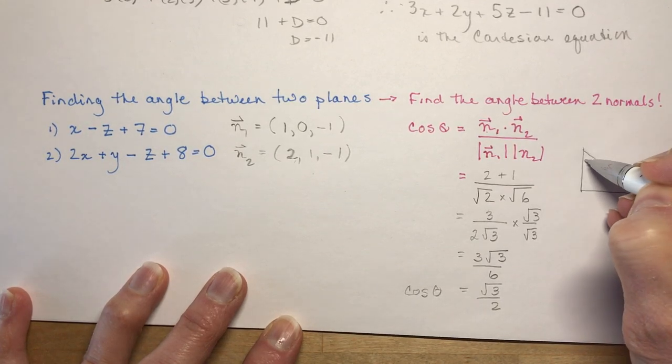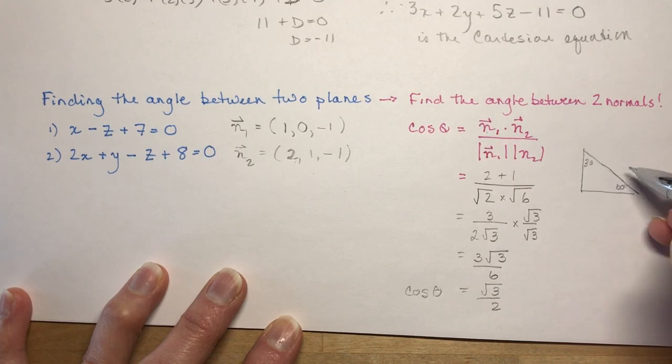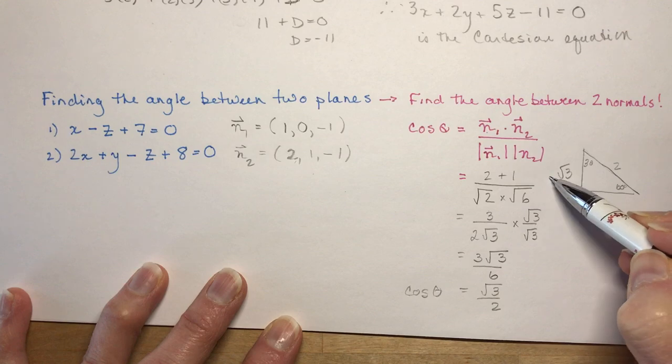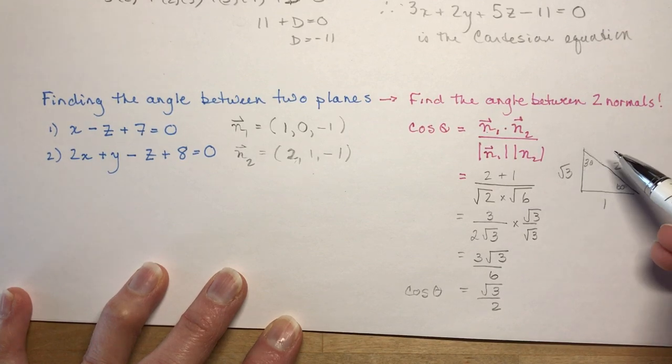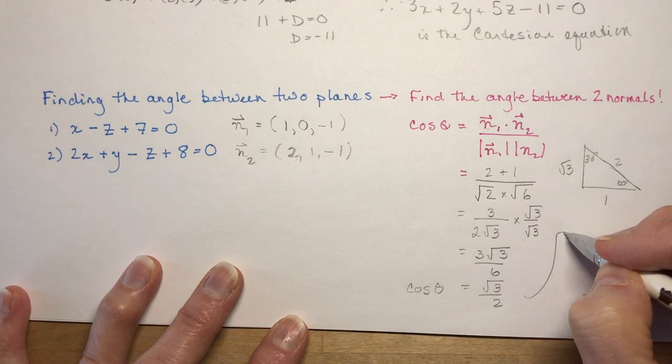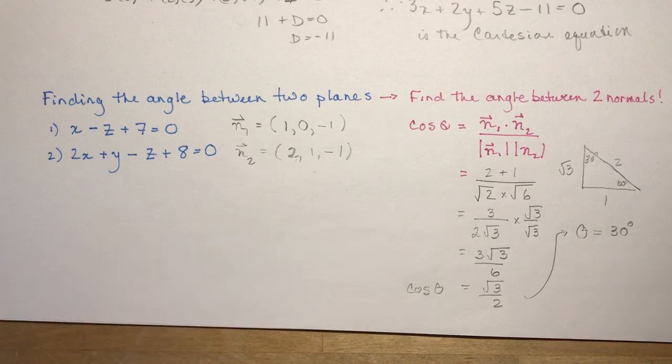So if this is 30 degrees here, and this is 60 here, remember the long side is two, one, square root three. So root three over two would be the cos of 30 degrees. So theta is equal to, and you don't have to put an approximately sign because it is exactly 30 degrees.